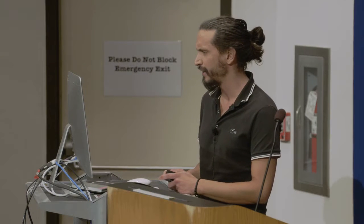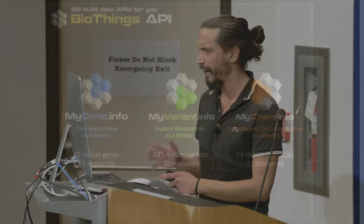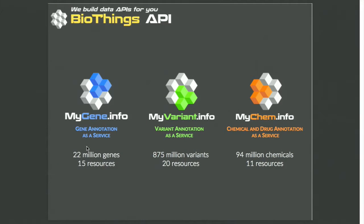Today I'm going to talk about the Biosync Studio. It's an application we use to build our Biosync API. We currently have three main APIs: MyGene, MyVariant, and MyChem.info. All of these APIs are an aggregation of multiple resources, and they are built on the same model.